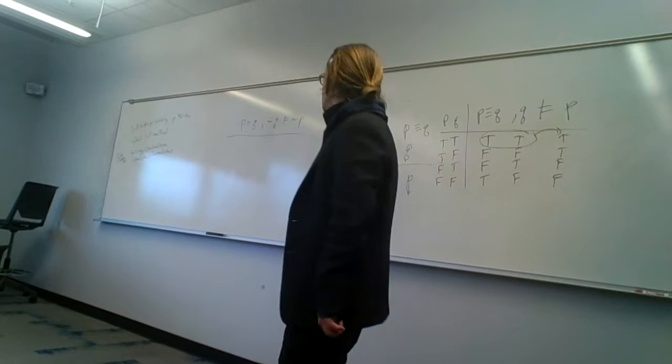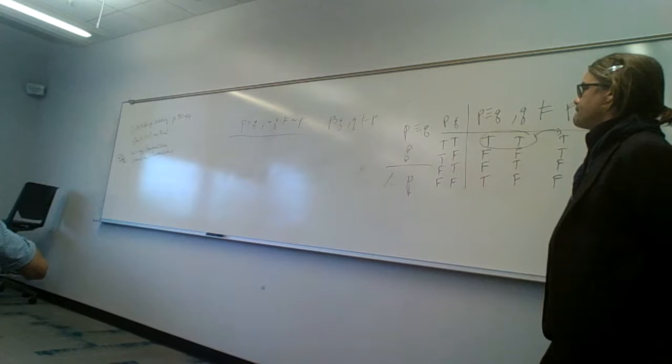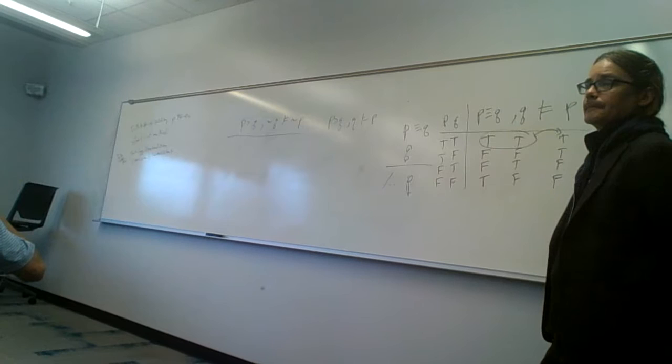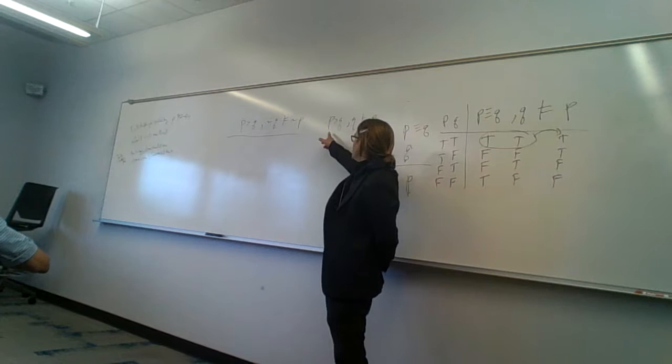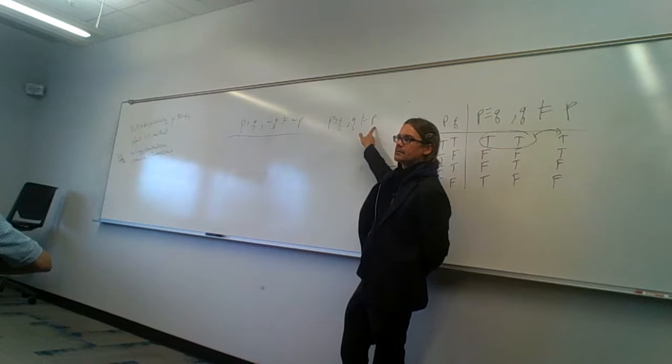Which of these is valid and which of these is invalid? Can you tell? Y'all can't tell between these two which one's valid and which one's invalid? What if I say: if this thing is a cat then this thing is a mammal, this thing is a mammal, therefore it's a cat. Is that valid or invalid?